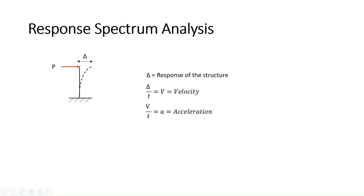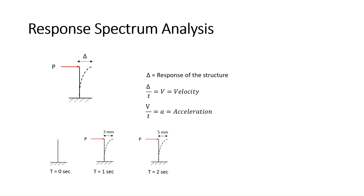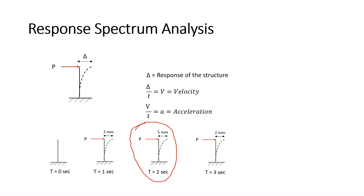Let's say we have a structure at its mean position at t equal to 0 seconds, and it is subjected to a ground motion due to earthquake. At t equal to 1 second, the displacement generated is 3 mm. At t equal to 2 seconds, the structure is displaced by 5 mm. This earthquake ground motion lasted for only 3 seconds. The maximum response of the structure is at t equal to 2 seconds, which is 5 mm. We are concerned only about the maximum response — if we design our structure for this maximum response, it will obviously withstand all other responses.